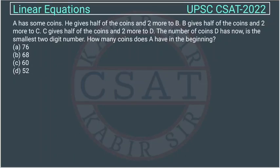This is a question of linear equation asked by UPSC in their CSAT paper of 2022. A has some coins. He gives half of the coins and two more to B.